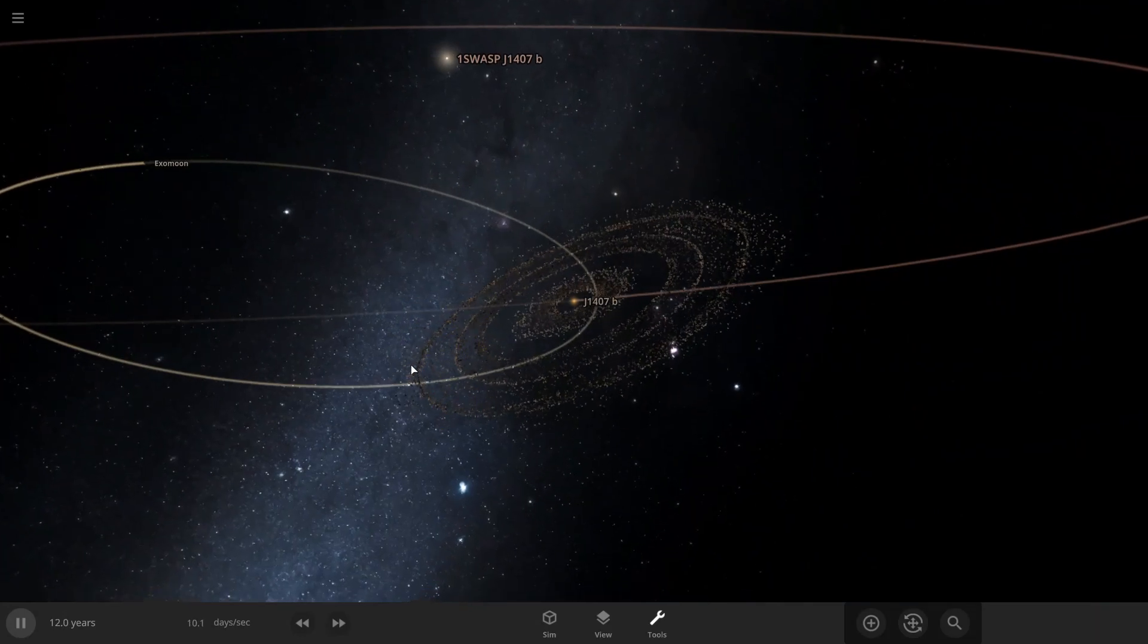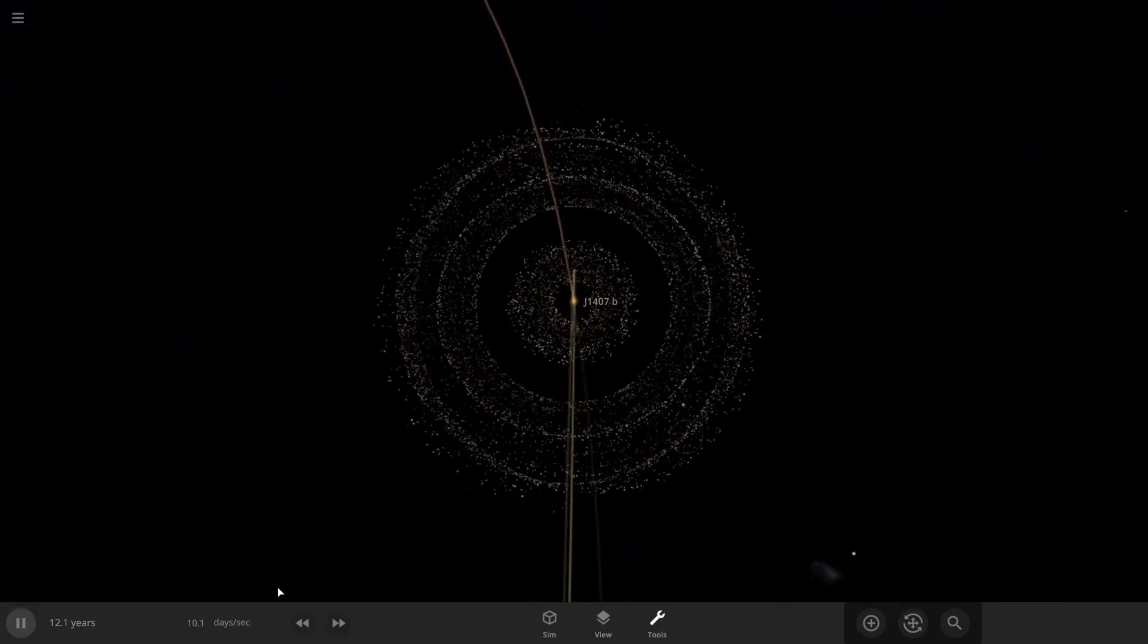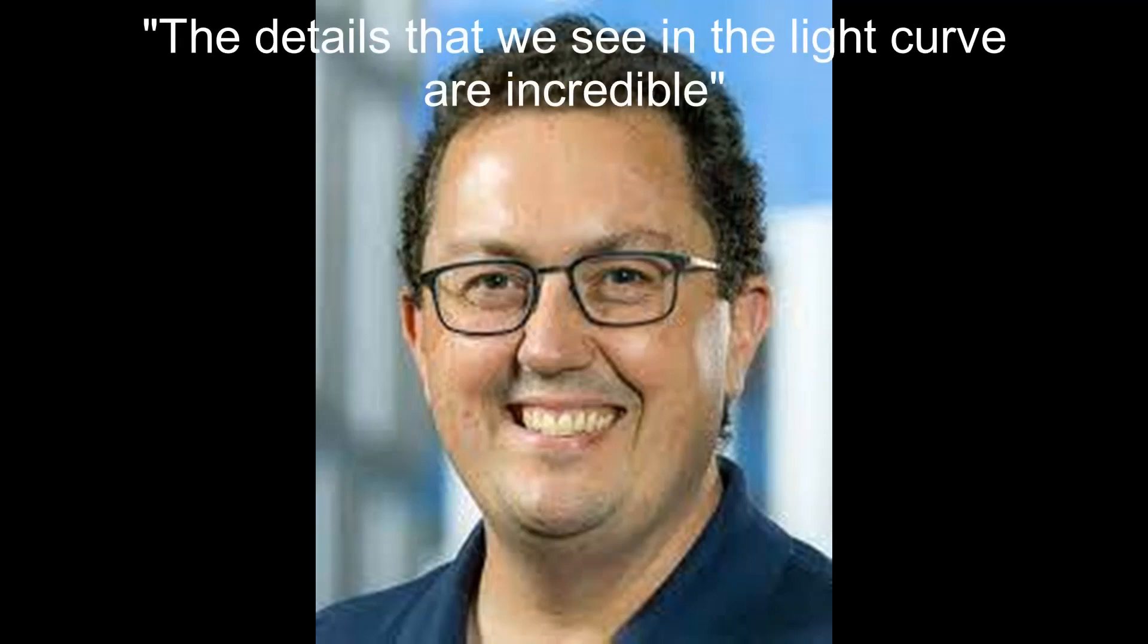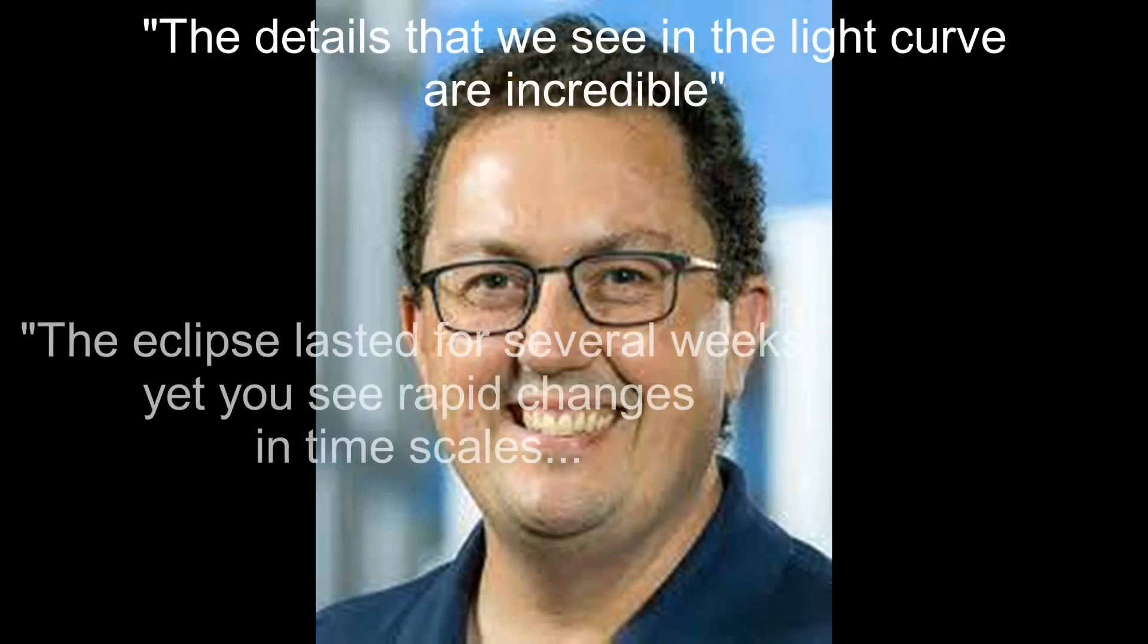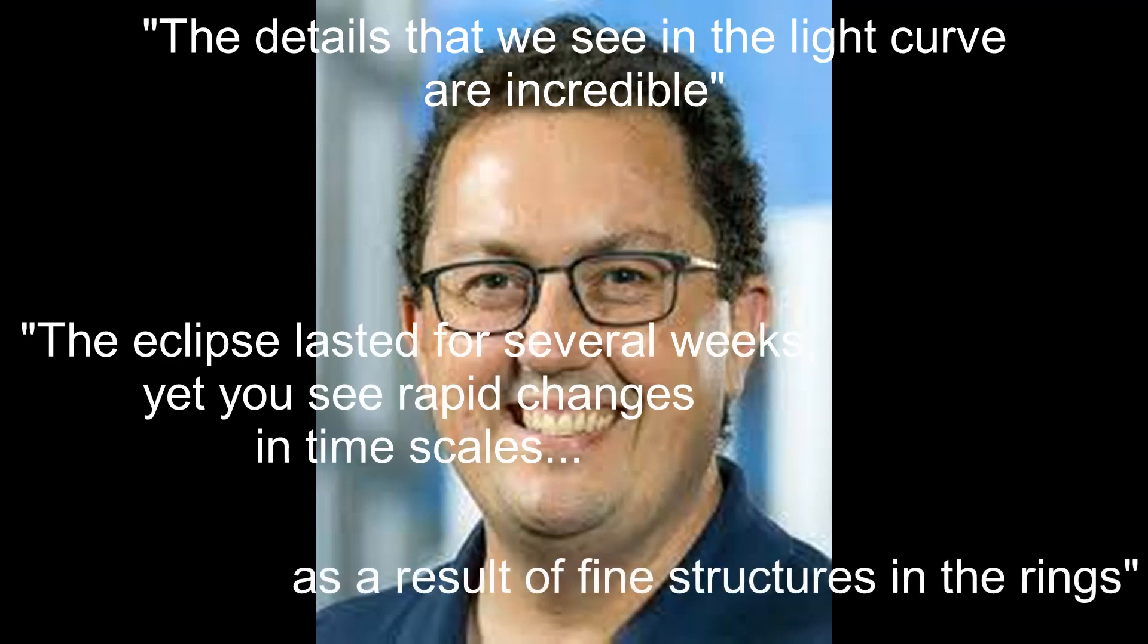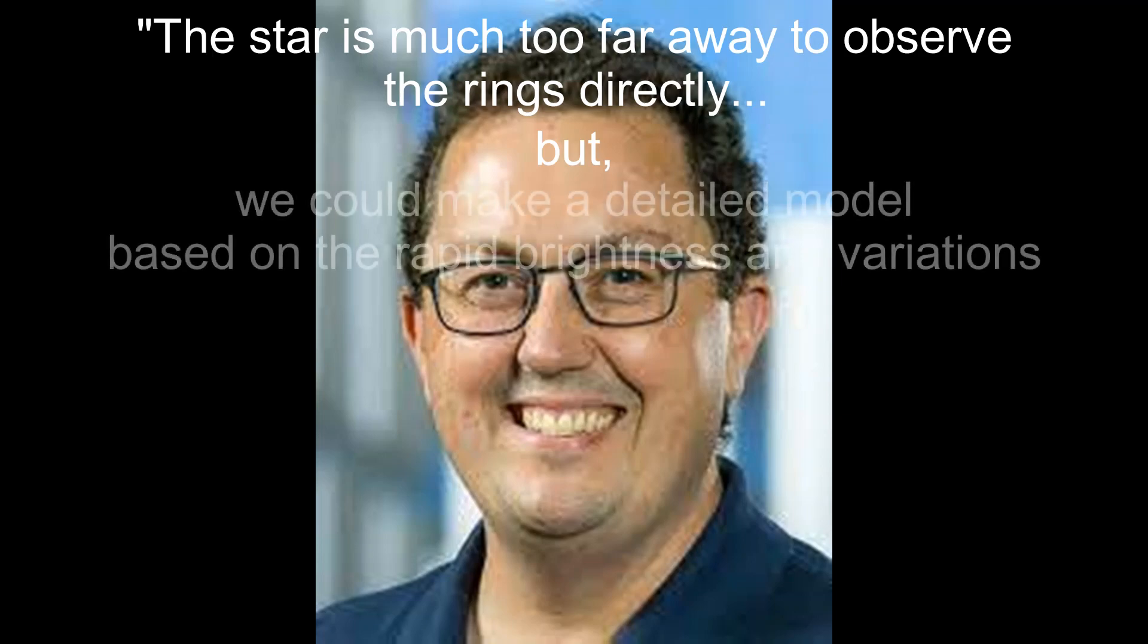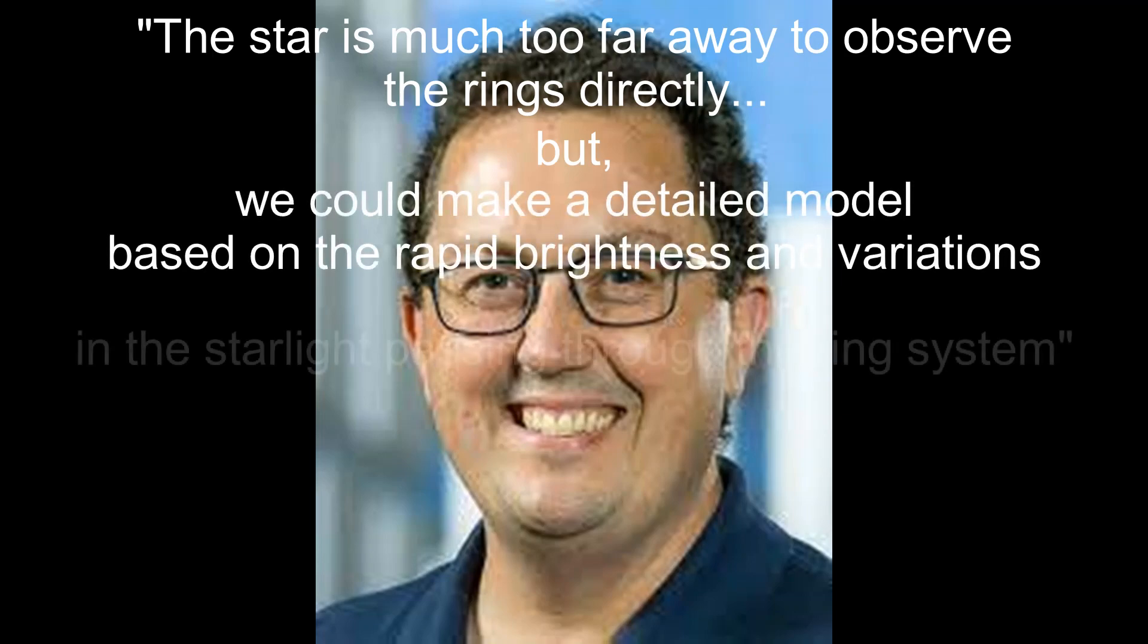Direct quote spoken from the astronomer and exoplanet researcher involved in the discovery of J1407b, Matthew Kenworthy, said: "The details that we see in the light curve are incredible. The eclipse lasted for several weeks, but you see rapid changes on timescales as a result of fine structures in the rings. The star is much too far away to observe the rings directly, but we could make a detailed model based on the rapid brightness variations in the starlight passing through the ring system."